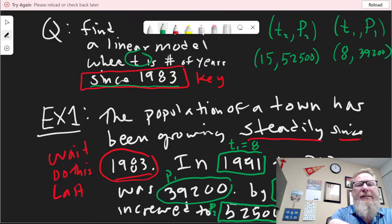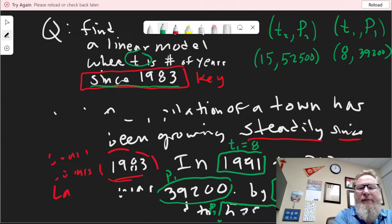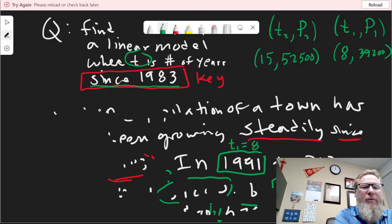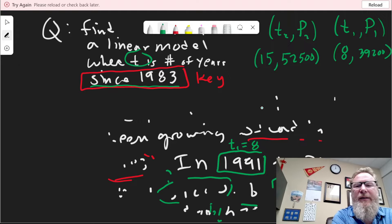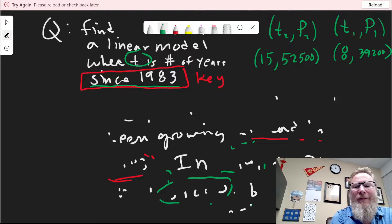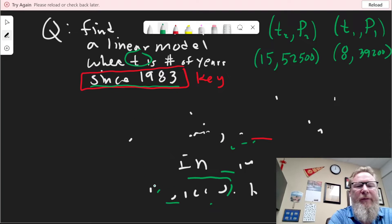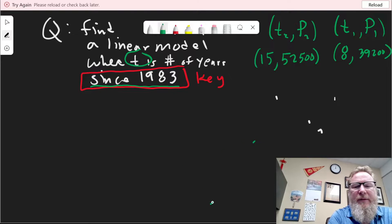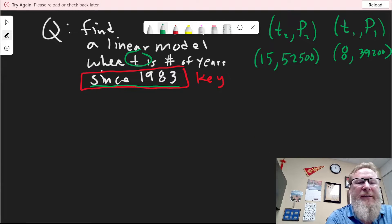So we got to be careful. Let's go ahead and identify who everybody is. First, we're going to find the slope.